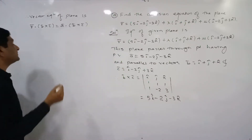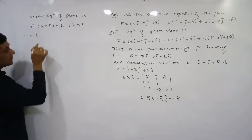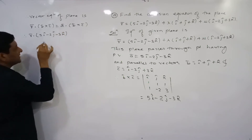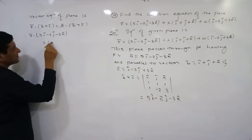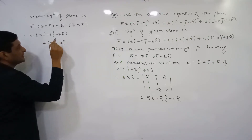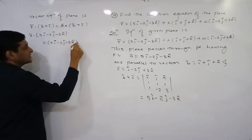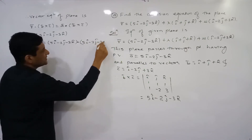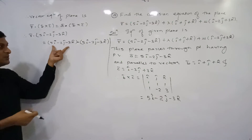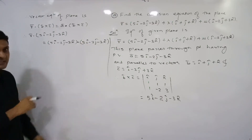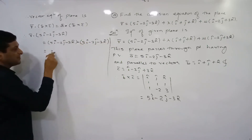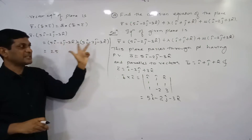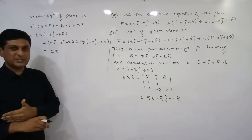Substituting all values in the formula r̄ · (b̄ × c̄) = ā · (b̄ × c̄): on the right side, ā = 5î - 2ĵ - 3k̂ and b̄ × c̄ = 5î - 2ĵ - 3k̂. Coincidentally both values are the same here, though this is not necessary in every example. We take the dot product of these two vectors expressed in Cartesian form, multiplying corresponding coefficients of î, ĵ, and k̂.